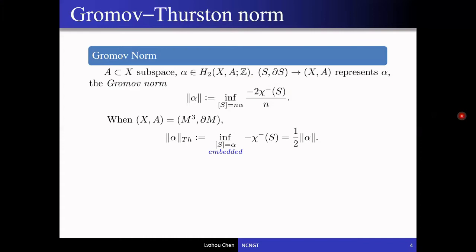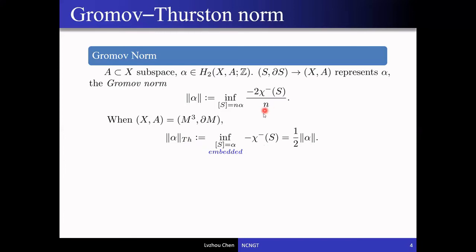In the special case of a three-manifold with boundary, there is a similar notion called the Thurston norm, defined in the same way except that n is always taken to be one and the surface is taken to be embedded. Ignoring those two differences, this would be exactly half of the Gromov norm. But in fact this holds true in general, because Thurston showed that the norm using embedded surfaces is linear on rays, so having this n or not doesn't make a difference. Also, by a deep theorem of Gabai and Thurston on taut foliations, one can also ignore the embeddedness.